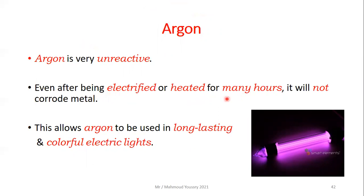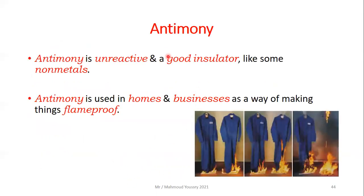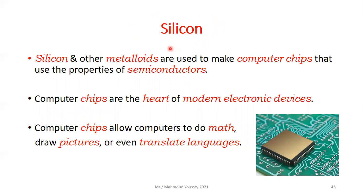Argon is very unreactive — even after being electrified or heated for many hours it will not corrode metals. This property allows argon to be used in long-lasting and colorful electric lights. Boron is a metalloid that can be used like both metals and non-metals: the fibers of pure boron are lightweight and very strong, and boron is used to strengthen modern aerospace structures. Antimony is unreactive and a good insulator; it is used in homes and businesses to make things flame-proof.